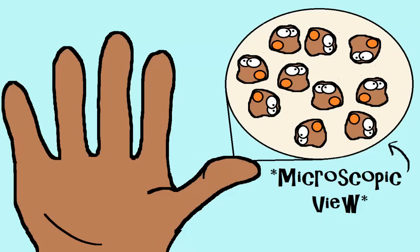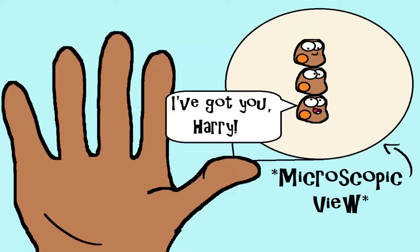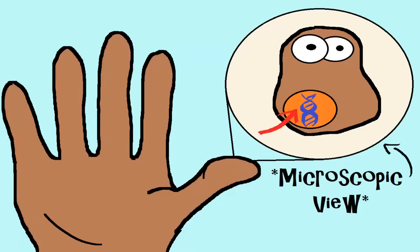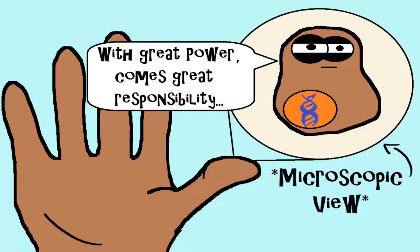We take these cells for granted sometimes, but your body is made up of millions of cells that work together. Cells that are very organized with specific functions. Cells that carry your whole DNA code, but use specific parts of your DNA code depending on the cell's function.